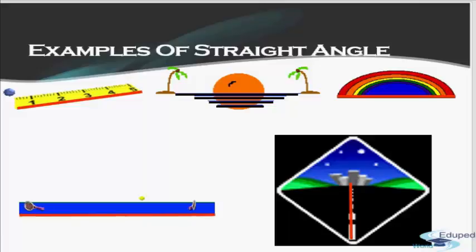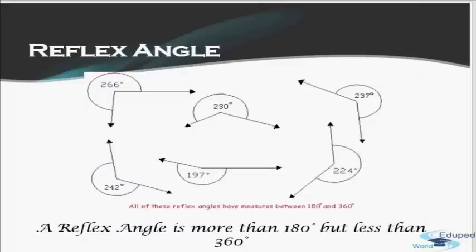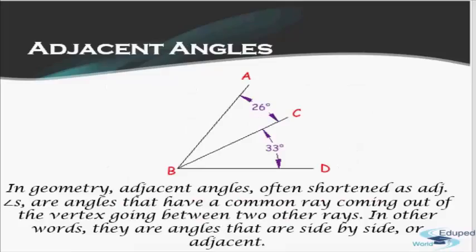The reflex angle covers the range from 180 to 360 degrees. So having covered 0 to 180 with acute, right, obtuse, and straight angles, the remaining range — from 180 to 360 — gives us the reflex angle. Any angle that is more than 180, whether it's 181 or 359 degrees, is called a reflex angle. We went through all of this so that we can now talk about the angles formed by the intersection of two lines.